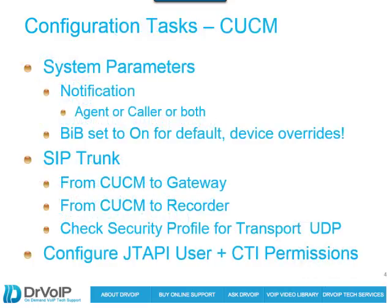The configuration tasks are pretty straightforward. At the system level, go into system parameters. When you're working in Cisco, you'll notice all the settings in drop-down windows that say default — those defaults are set in system parameters. In the Call Manager, go to System > System Parameters, and that's where you set up the system defaults. The two that are important here are recording notification — do we want to provide a beep tone, and who do we want to provide it to: the caller, the agent, or both? You go and set that up in system parameters.